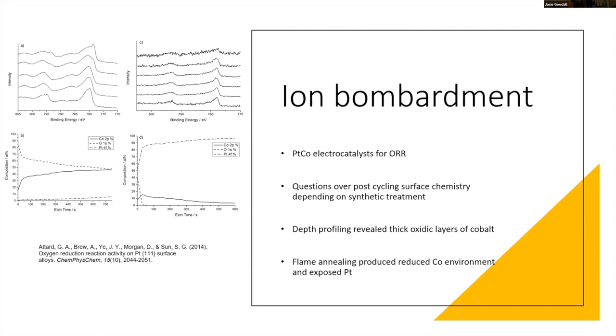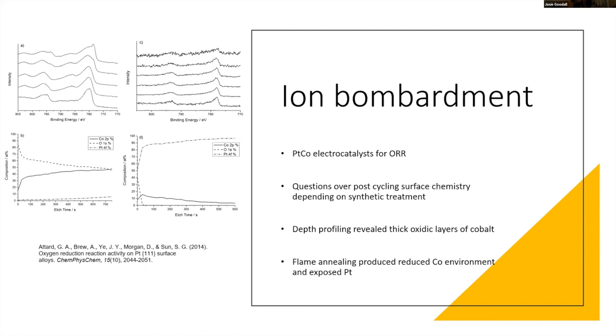They did a couple of different synthetic treatments and did some depth profiles to look at how the surface was behaving after these different treatments. What they saw was that after calcination, you could get a more reduced cobalt system, whereas without calcination, you had these thick oxide layers. A depth profile showed the non-calcinated sample had thick oxide layers roughly 10 nanometers thick at minimum, which was very much influencing the ORR reaction. You can see the plots showing cobalt and oxygen profiles.